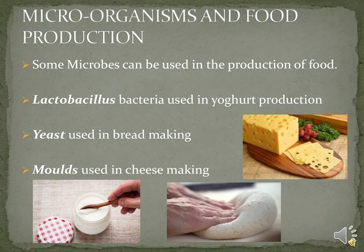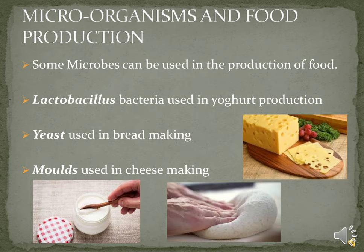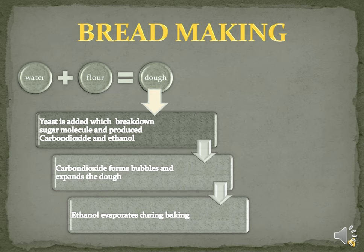Microorganisms and food production: on one hand, some microorganisms can cause food to decay; on the other hand, some are used in food production. Lactobacillus, a type of bacteria, is used in yogurt production. Yeast, a type of fungi, is used in bread making. Molds, another type of fungi, are used to make different types of cheese, which is why cheeses have different flavors and tastes.